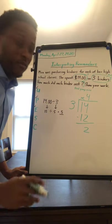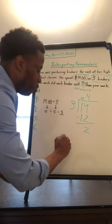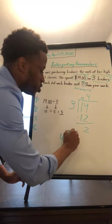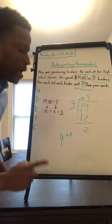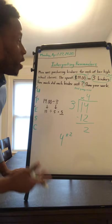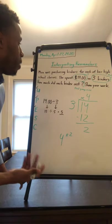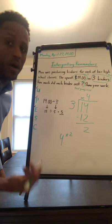Now, in fourth grade, you would have represented your answer as four remainder two. But not only does that not work in the context of this problem, that just doesn't make sense to answer the question as four remainder two because it's asking for a cost.